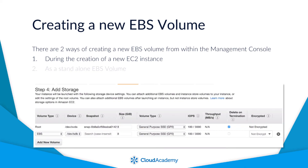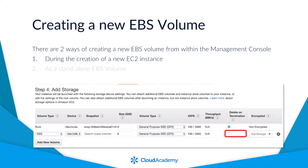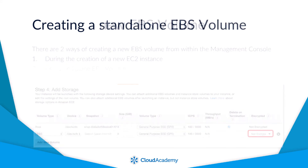When creating an EBS volume during an EC2 instance launch, at step 4 of creating that instance you are presented with the storage configuration options. Here you can either create a new blank volume or create it from an existing snapshot. You can also specify the size in gigabytes and the volume type. Importantly, you can decide what happens to the volume when the instance terminates — either delete it with the instance or retain the volume to maintain the data and attach it to another EC2 instance. You also have the option of encrypting the data if required.